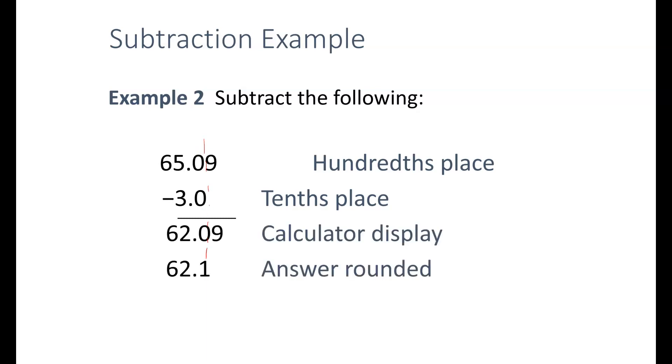On the calculator, we get 62.09. Rounding that, I get 62.1, because that 9 is over 5, so the 0 rounds up to 1.